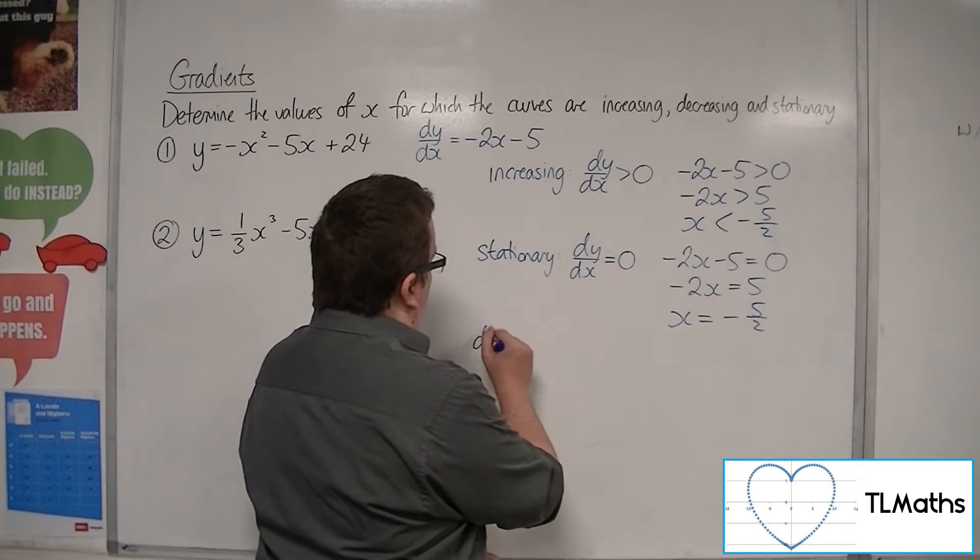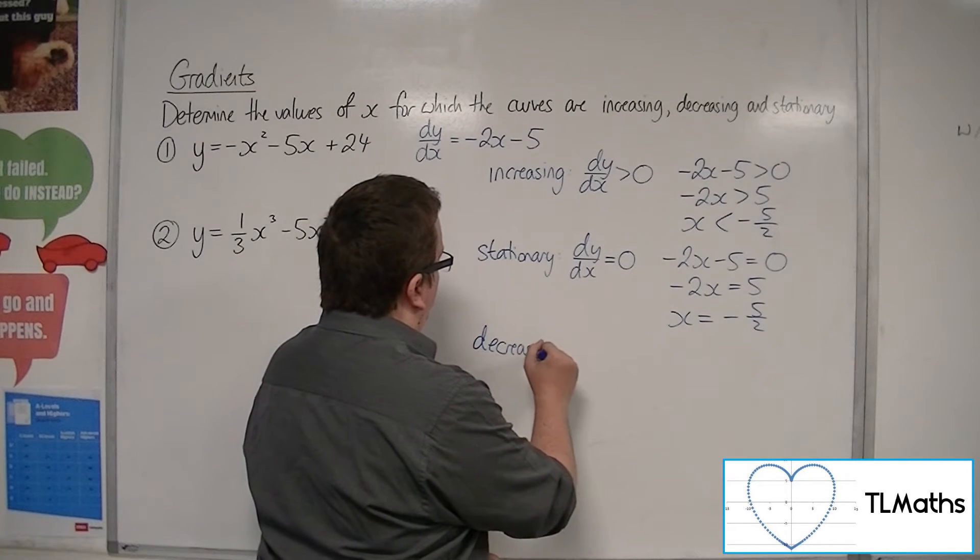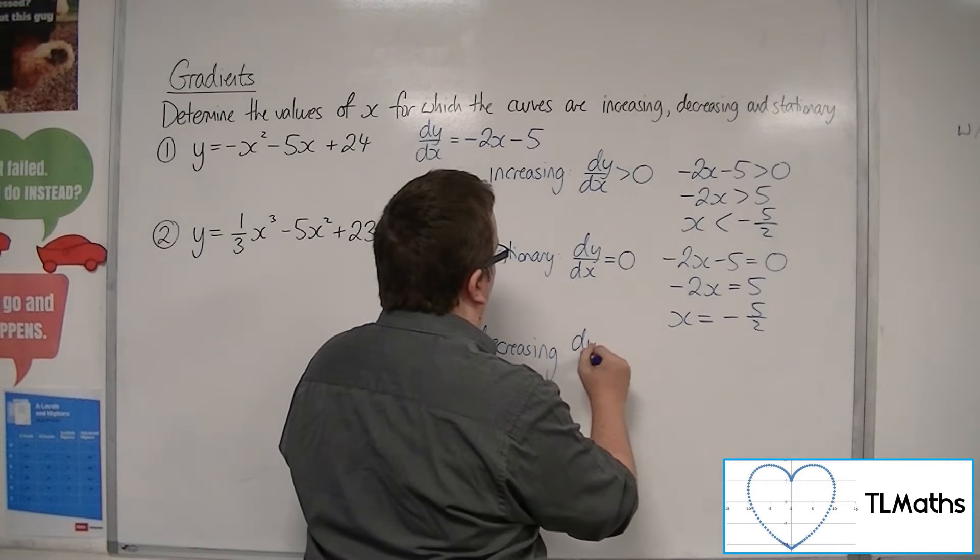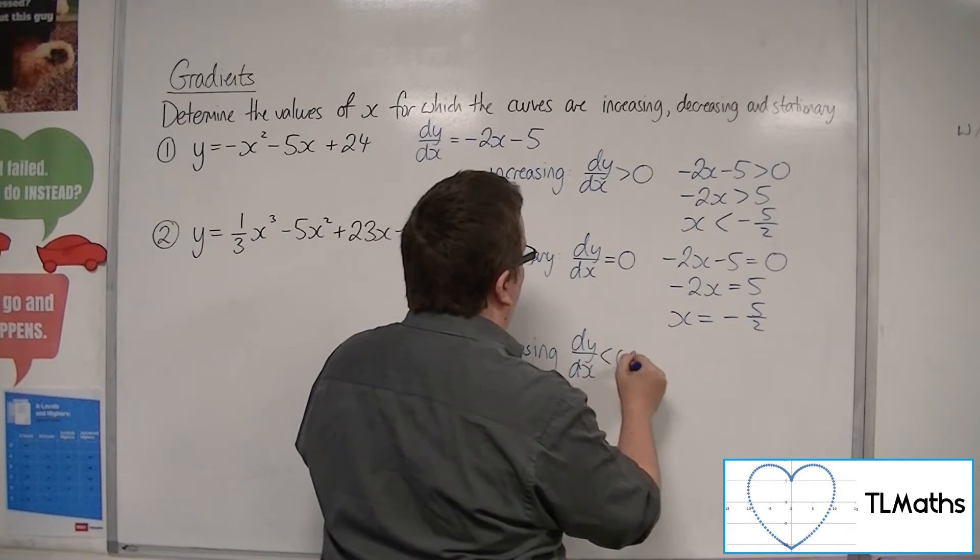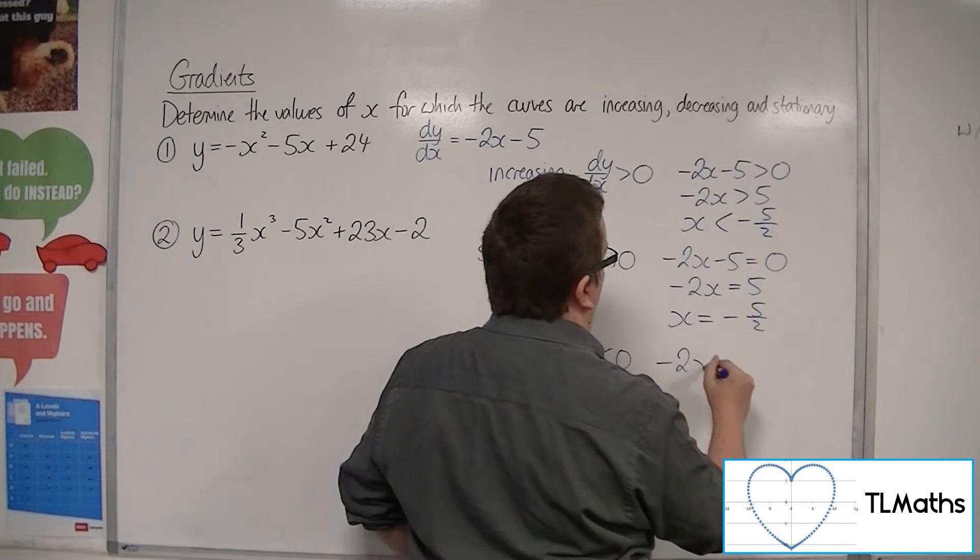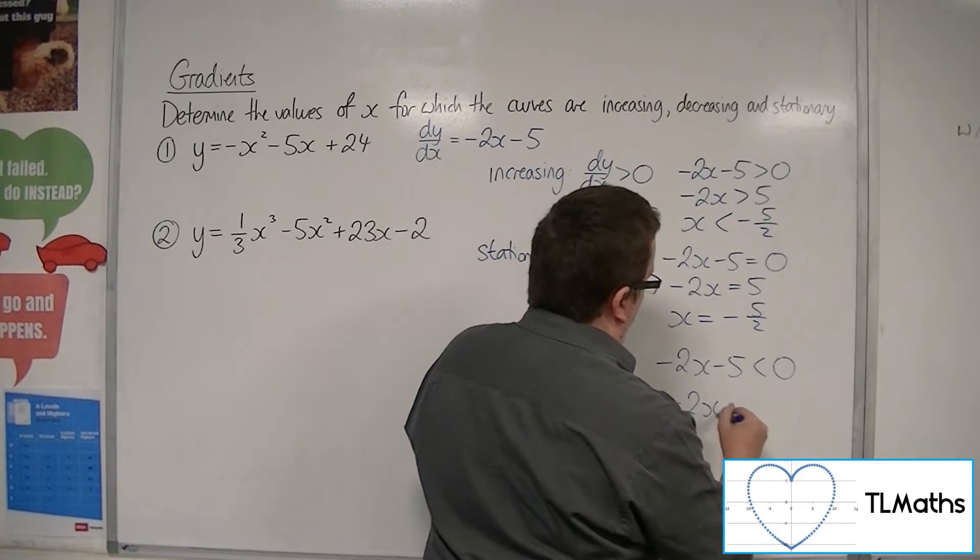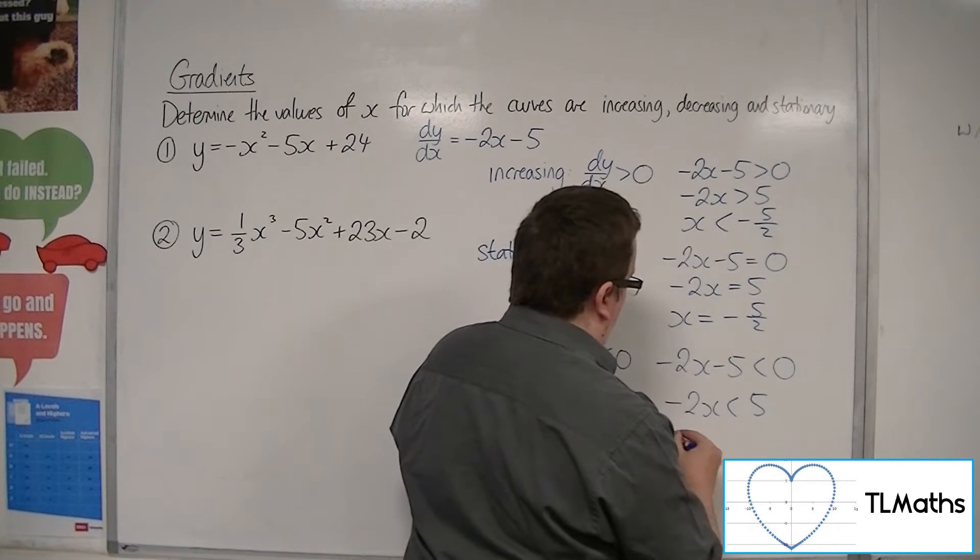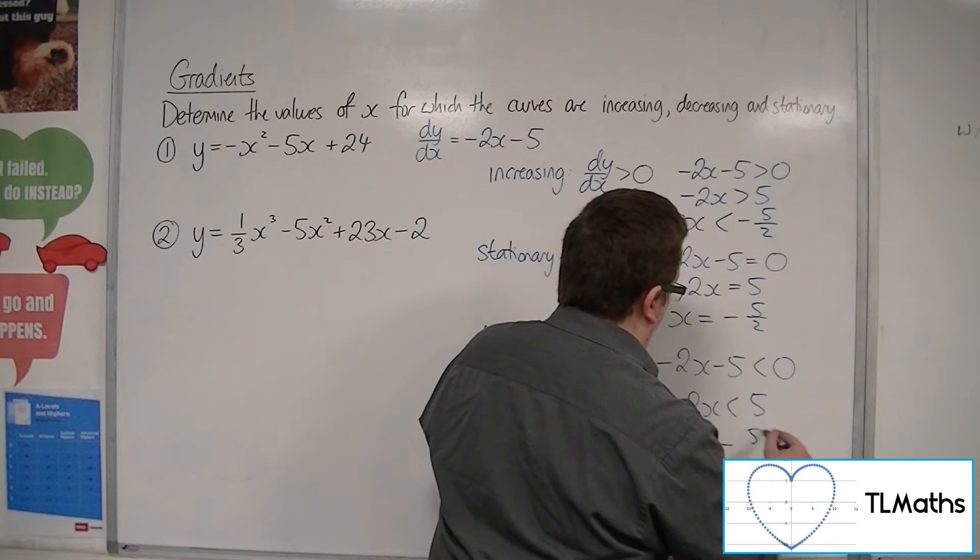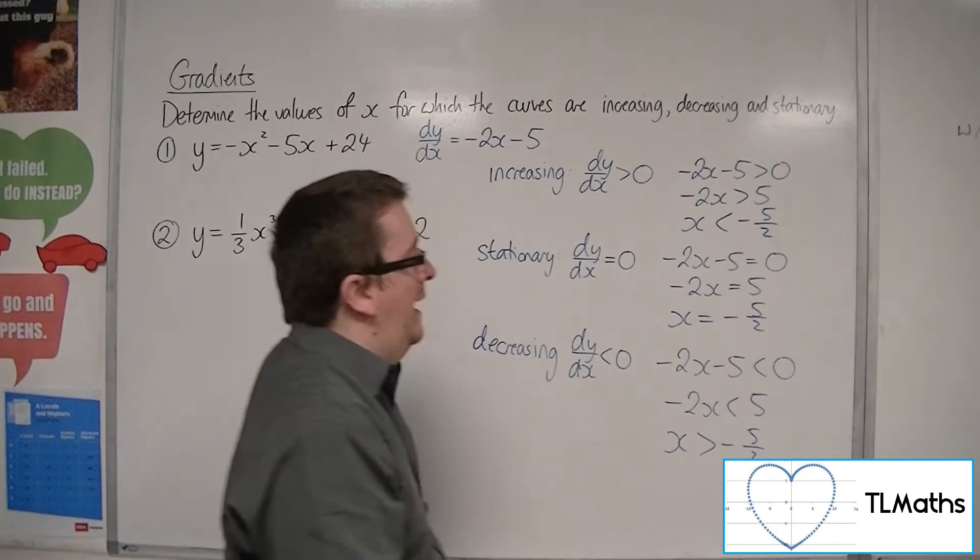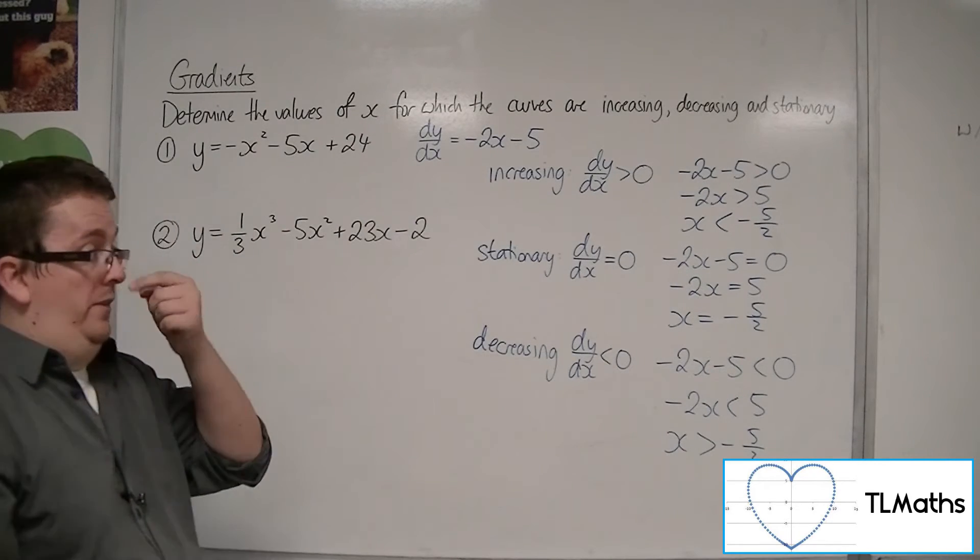And, it would be decreasing when dy by dx is negative. So, minus 2x minus 5 is less than 0. So, add the 5 to both sides. Divide both sides by minus 2. And, you get x is greater than minus 5 halves.